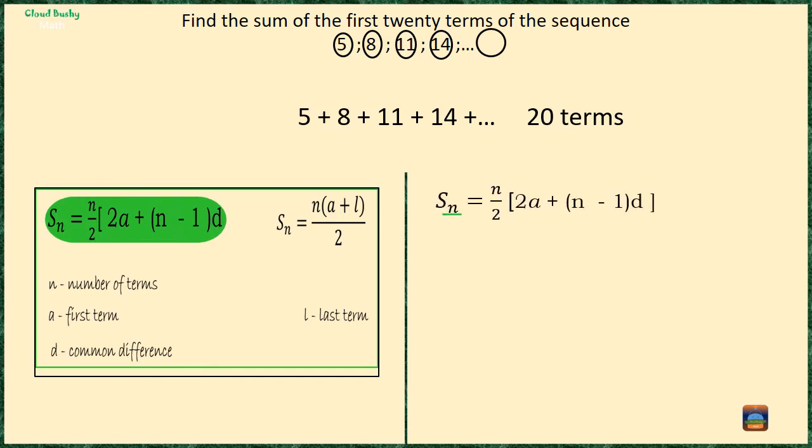So we want to substitute into this formula a, n, and d. Our n is going to be 20, a is 5, and d the common difference is equal to 3.